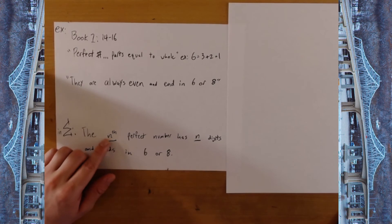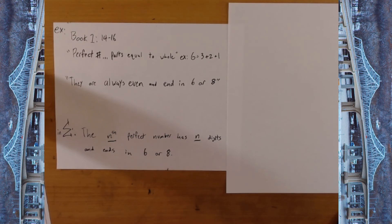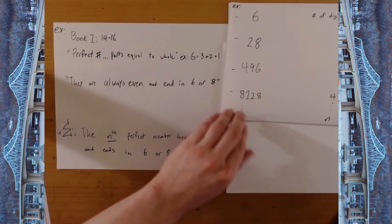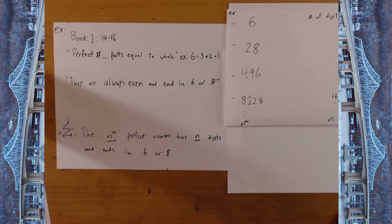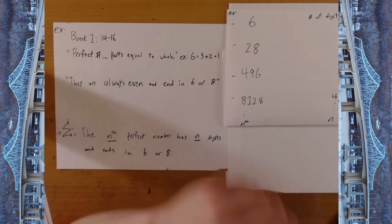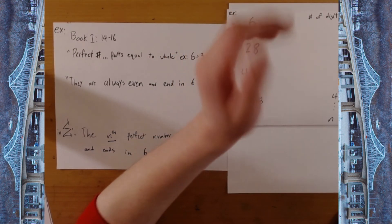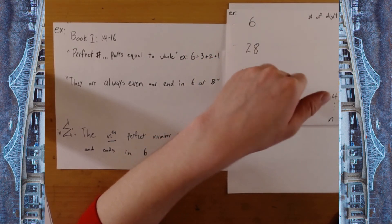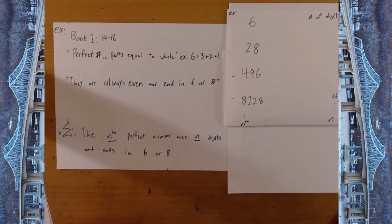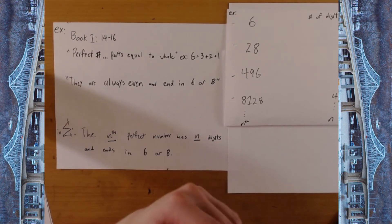What he goes on to state is that the nth perfect number has n digits and ends in 6 or 8. Ending in 6 or 8 is still true — as far as we know up to 2020, all perfect numbers do end in 6 or 8. However, the claim that the nth perfect number has n digits is absolutely false. At Nicomachus's time, the four proven perfect numbers — proven by Euclid — were 6, 28, 496, and 8,128. A casual look shows: 6 has 1 digit, 28 has 2, 496 has 3, and 8,128 has 4. So Nicomachus simply used inductive reasoning to assume any perfect number would have that nth amount of digits.